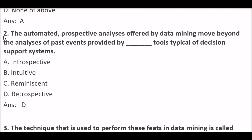Next question. The automated prospective analysis offered by data mining moves beyond the analysis of past events provided by blank space, typical of decision support systems. Option A: Introspective. Option B: Intuitive. Option C: Reminiscent. Option D: Retrospective. Right answer is Option D — Retrospective. The automated prospective analysis offered by data mining moves beyond the analysis of past events provided by retrospective tools typical of decision support systems.